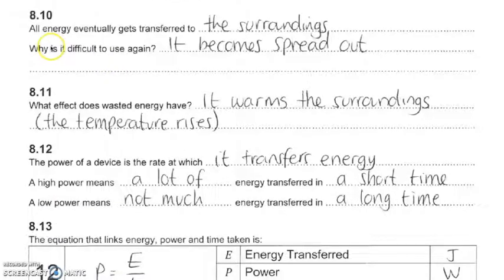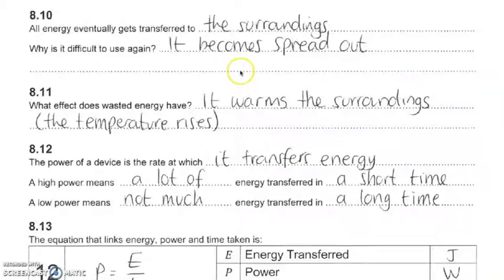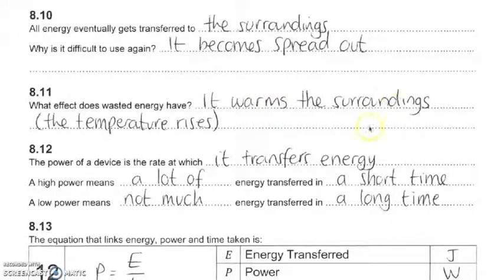Remember that all energy in any form of energy transfer eventually gets sent to the surroundings. That initial concentrated amount of energy — whether in a battery or in the food you have in the morning — eventually becomes spread out and dissipates, making it hard to collect again. The energy spread to the surroundings is in the form of heat, so the temperature of the surroundings will rise.